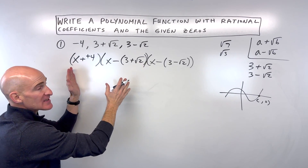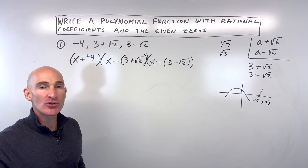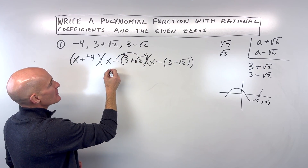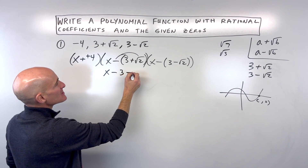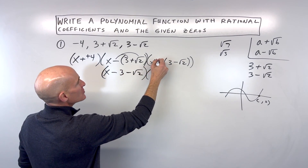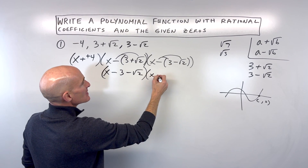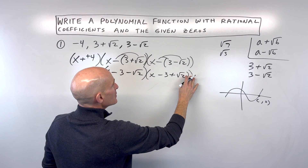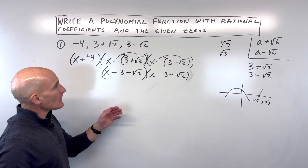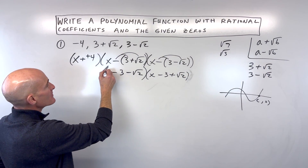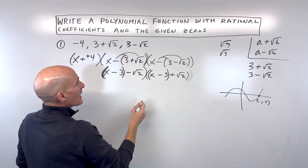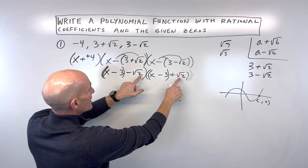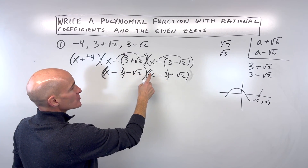Now all we have to do is multiply this out. First, we're going to distribute this negative into the parentheses, giving us x minus three minus square root of two, and then distribute the other negative to get x minus three plus square root of two. Then we're going to group these x minus threes together, and what this gives us is a sum and difference pattern — we've got x minus three, and square root of two, but one we're subtracting and one we're adding.